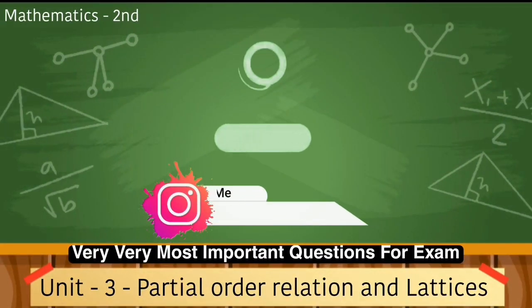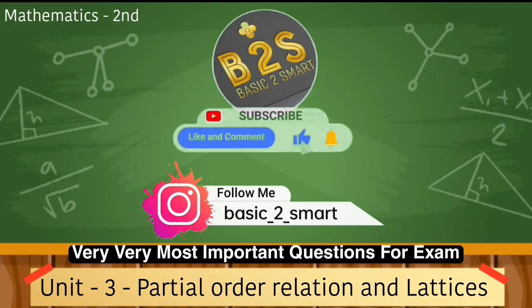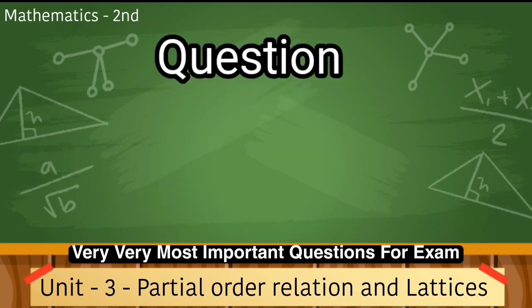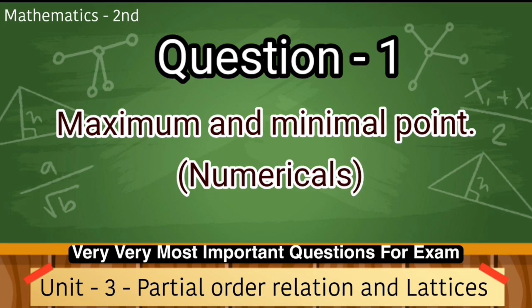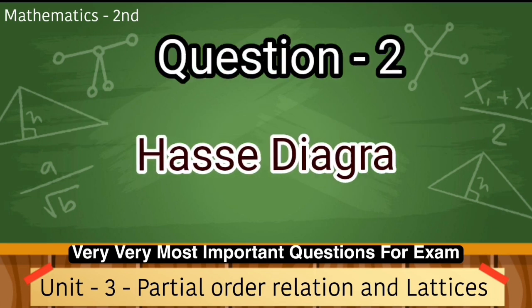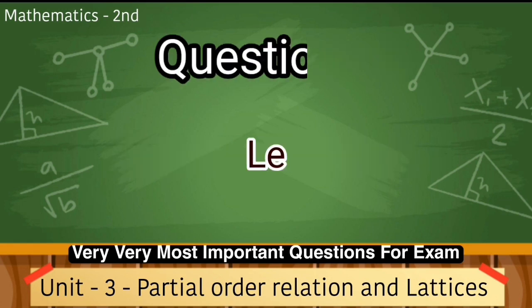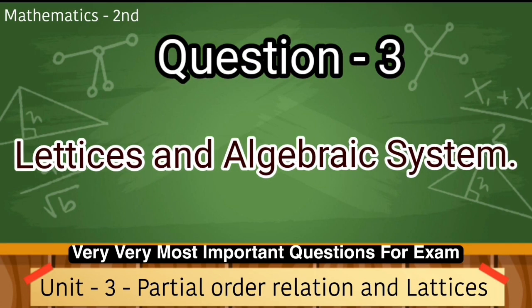Ab aatiye third unit, jiska naam hai partial order relation and lattice. Jismein bhi hamare three most important questions hain. Number first question hai jiska naam hai maximal and minimal point. Number second question hai Hasse diagram. Number third question hai lattice and algebraic system.